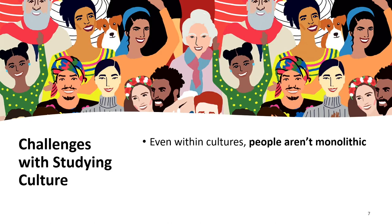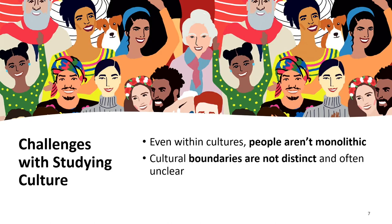Another issue is that cultural boundaries aren't distinct and are often unclear. When we talk about, let's say, Asian American culture, what distinguishes who counts and who doesn't count as Asian American? Or thinking about Midwest culture, what counts as people who are Midwest or not Midwest? Is it strictly that state boundary, or is there some fuzziness around that? Can you live on the border between a Midwest state and a non-Midwest state and still be considered someone from the Midwest?